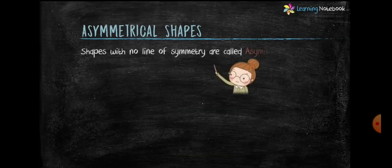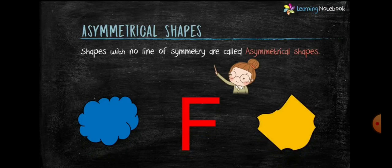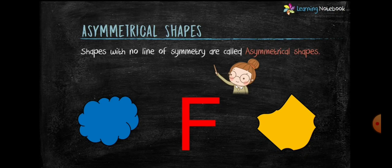Some shapes do not have line of symmetry. Such shapes are called asymmetrical shapes. Like these three figures are asymmetrical shapes as they do not have any line of symmetry.